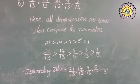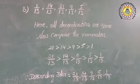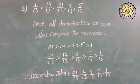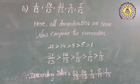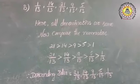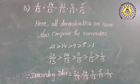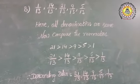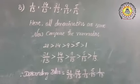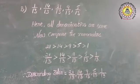Children, you should remember one thing: descending order is nothing but the reverse order of ascending order. And like that, ascending order is nothing but the reverse order of descending order. That's a very simple thing.